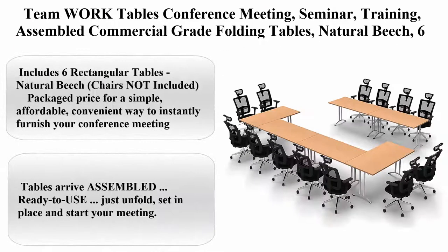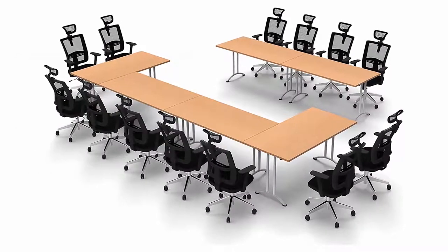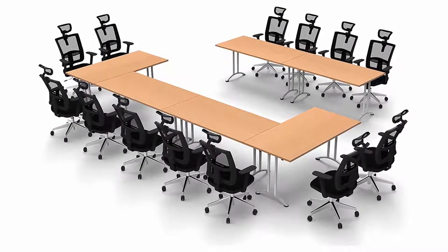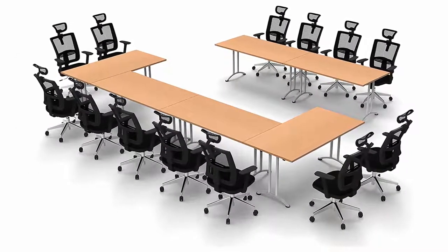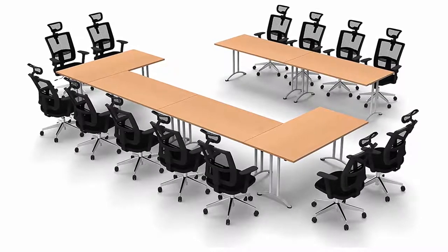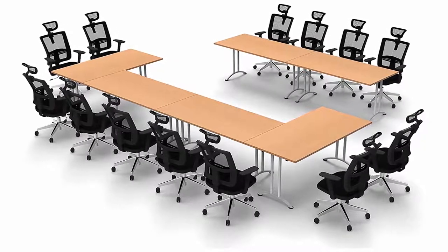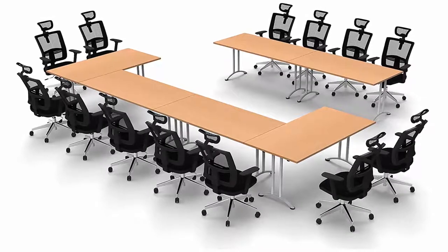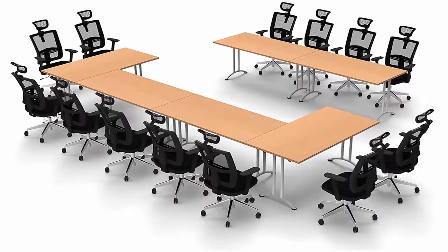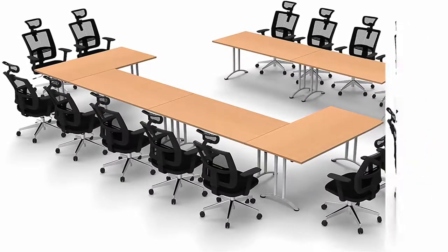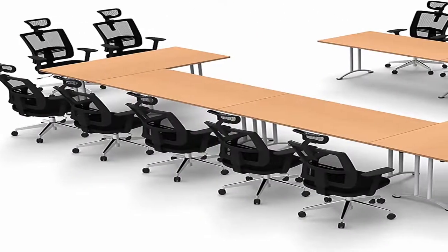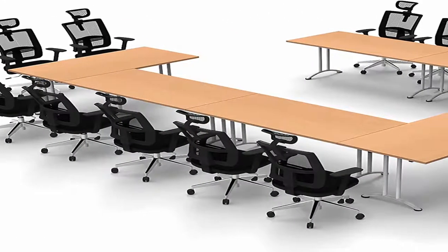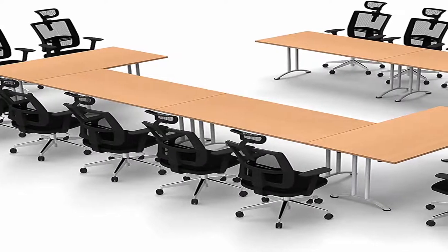Teamwork Tables Conference Meeting, Seminar, Training, Assembled Commercial Grade Folding Tables, Natural Beech, 6-piece. Material: Wood. Item Dimensions: 180 x 60 x 30 Inches. Shape: Rectangle. Base Type: Legs. Item Weight: 486 Pounds. About this item: Includes 6 Rectangular Tables, Natural Beech. Chairs NOT Included.